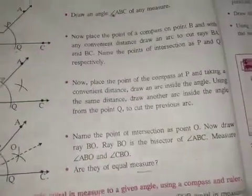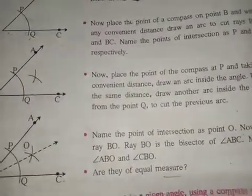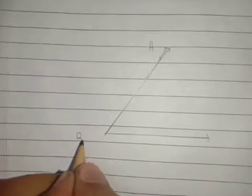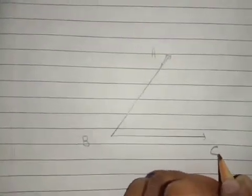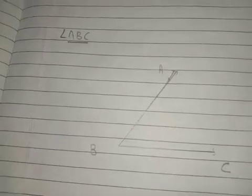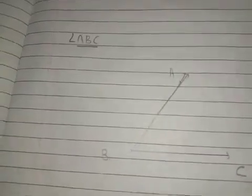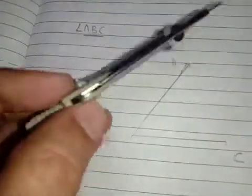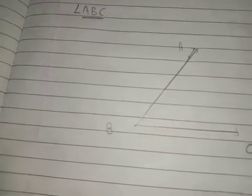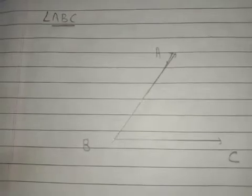Let me show you how to draw an angle bisector. Draw an angle and label it A, B, and C. This is our angle ABC. We will bisect this angle — dividing it into two equal parts using a compass.